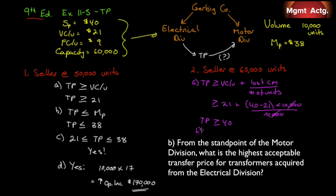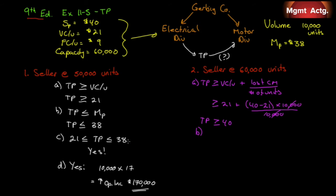Requirement 2B: from the standpoint of the motor division, what is the highest acceptable transfer price? This doesn't change. The transfer price must be less than or equal to $38 — from the buyer's perspective it's always less than or equal to the market price under all conditions.